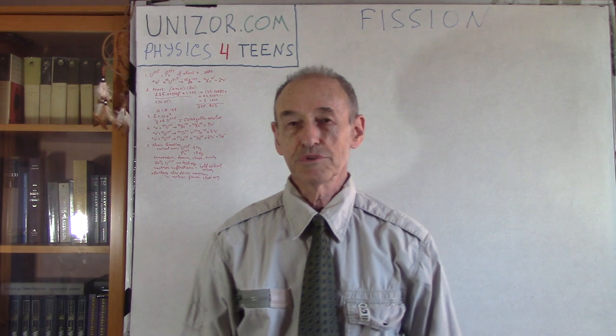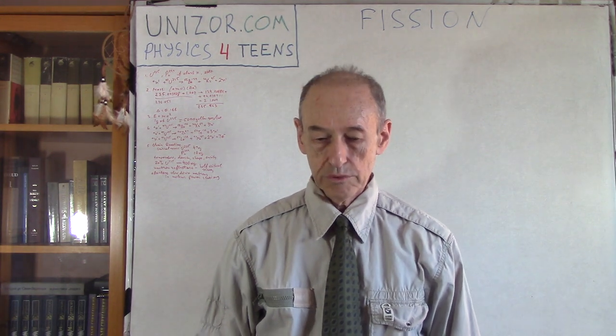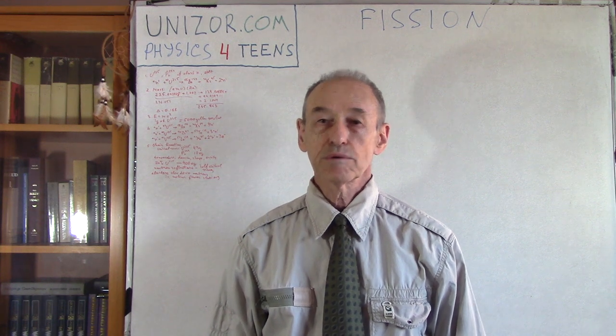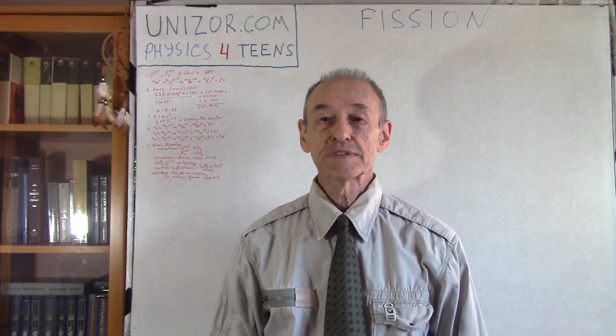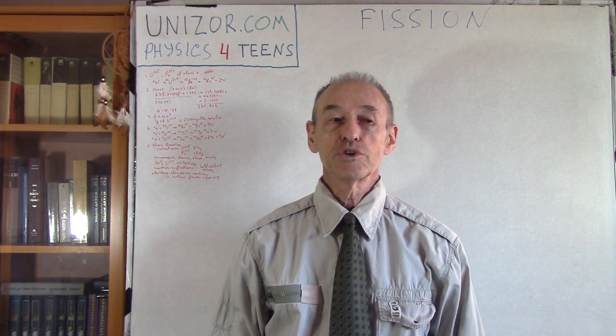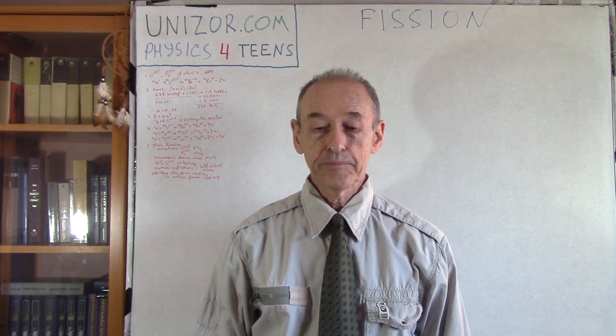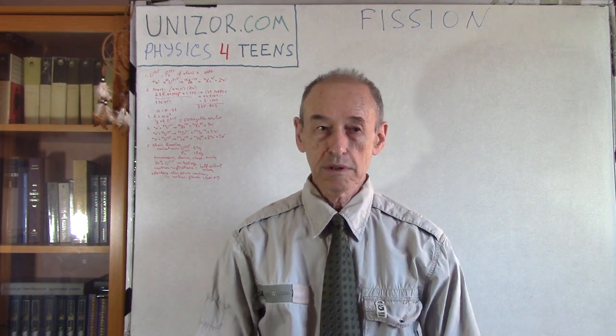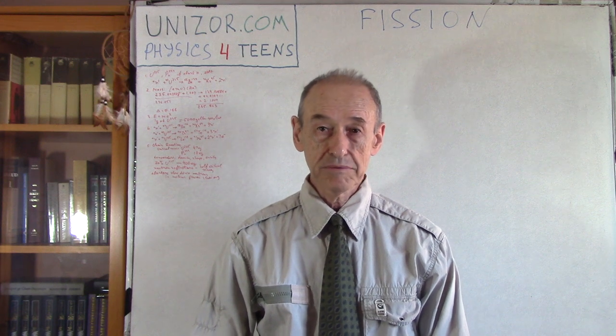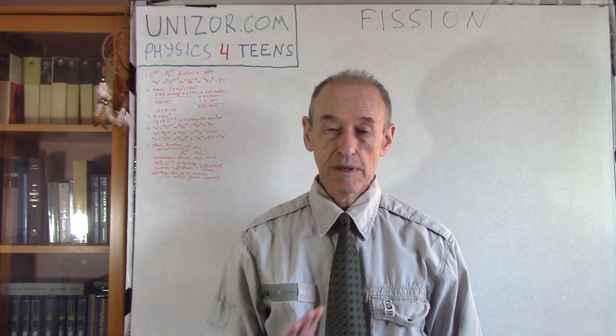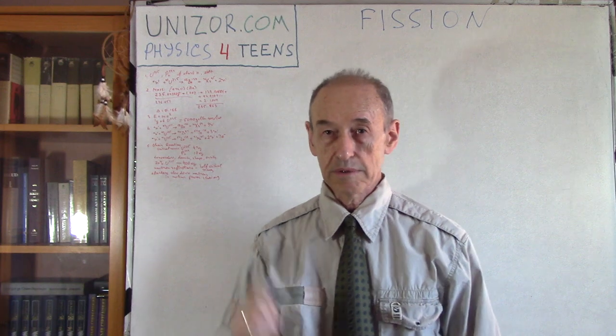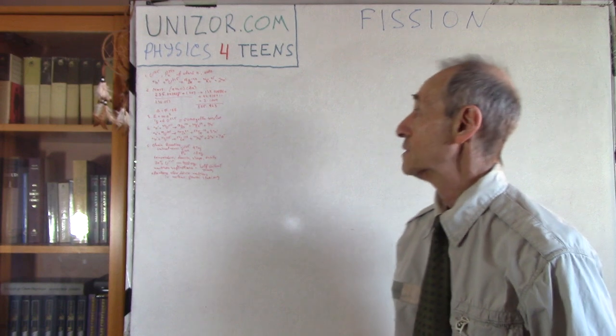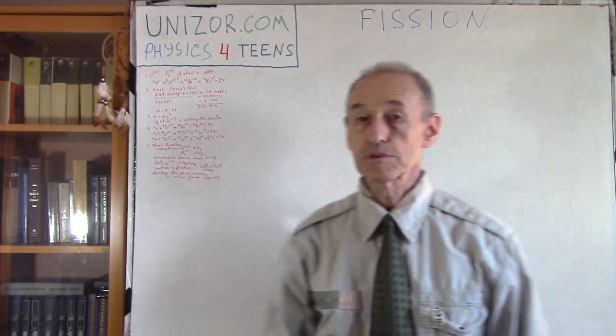Hi, I'm Zor, welcome to Unizor education. Today we will continue talking about certain things related to splitting nuclei of certain elements, which is called fission. Now the previous lectures were basically preparation to this one. We were talking about mass defect, so that's a very important part and I will definitely talk about this today. This lecture is part of the course called Physics for Teens presented on Unizor.com.